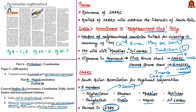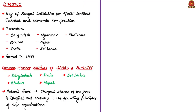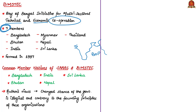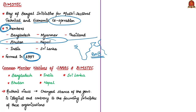BIMSTEC consists of 7 members that surround the Bay of Bengal: Bangladesh, Bhutan, India, Myanmar, Nepal, Sri Lanka and Thailand. BIMSTEC was formed in 1997, and in 2004 Bhutan and Nepal joined. When studying two or more similar regional groupings operating in an overlapping area, try to know how many countries are common. Between BIMSTEC and SAARC there is an overlap of five countries: Bangladesh, Bhutan, India, Nepal and Sri Lanka.